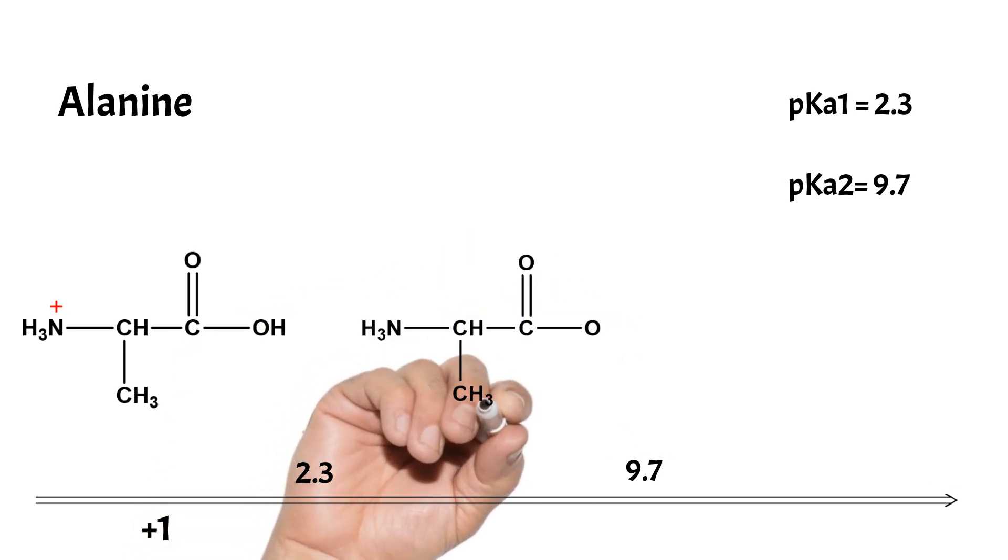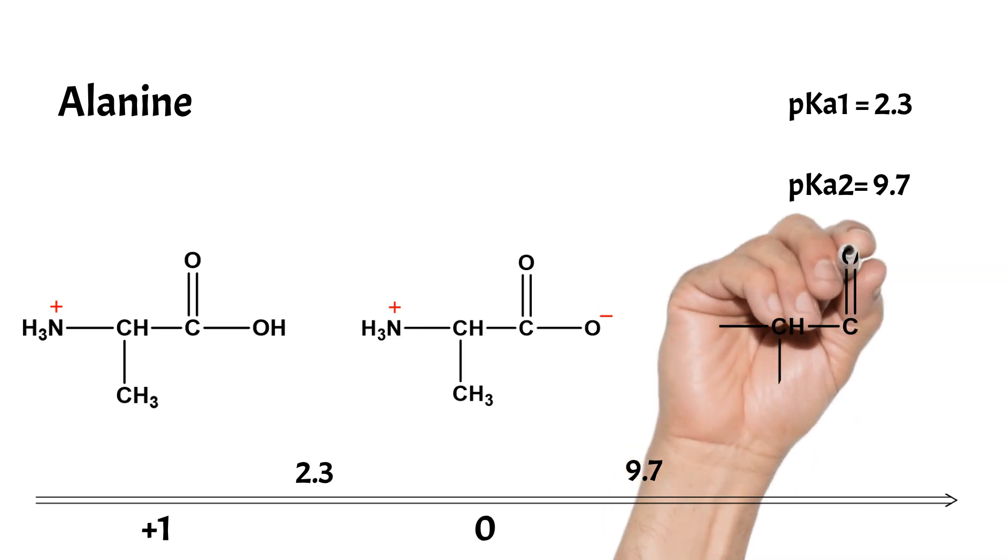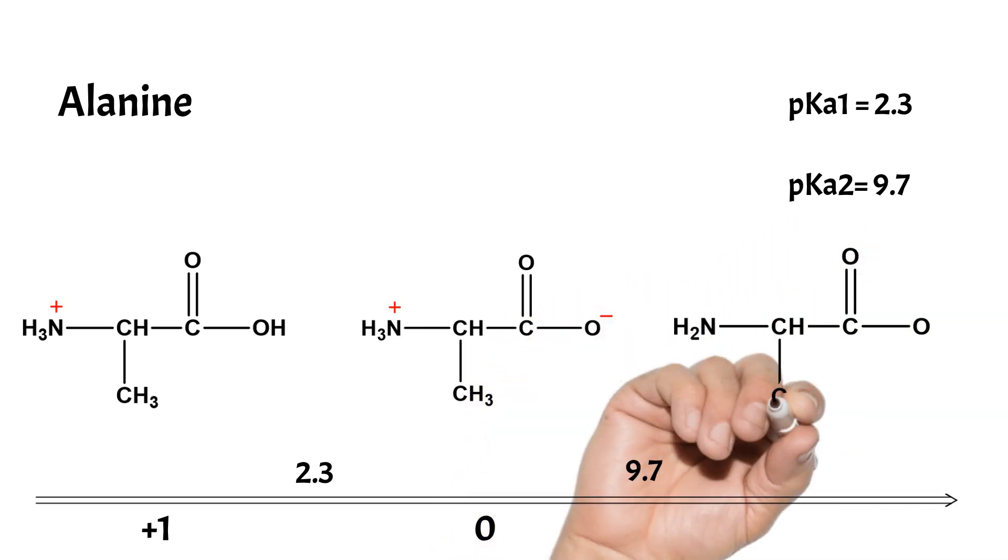As the pH increases, at pK1, the carboxylic group will lose its proton and the net charge becomes zero. And at pK2, the amino group will lose its proton and the net charge becomes minus one. As we see, the charge normally decreases by one at every dissociation step.